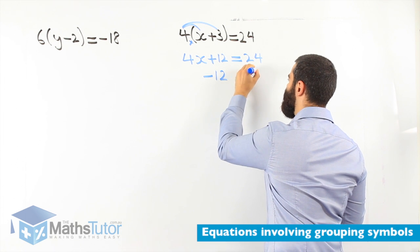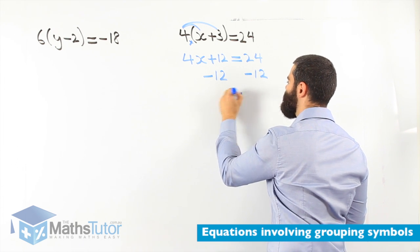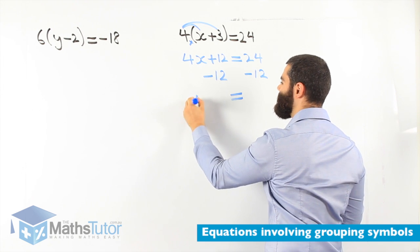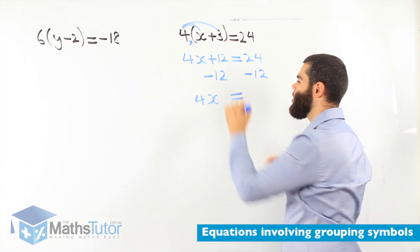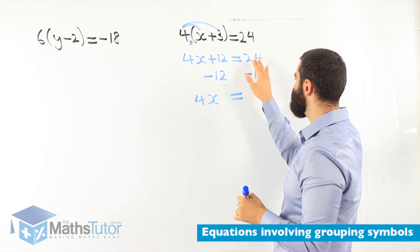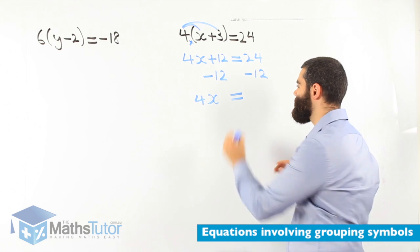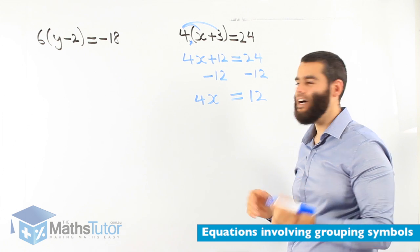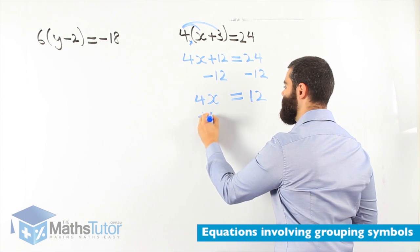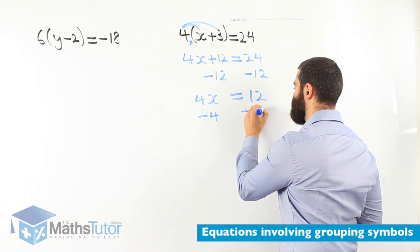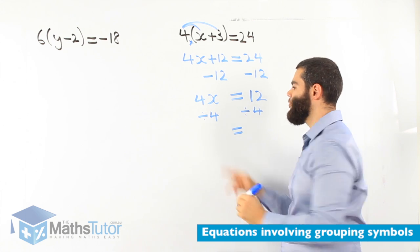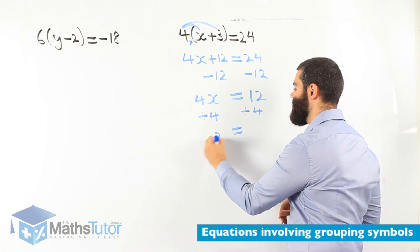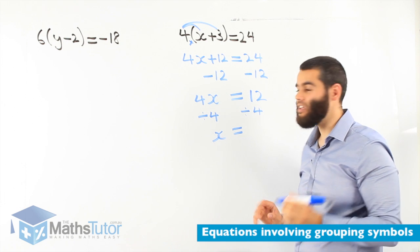Minus 12 on one side, minus 12 on the other side. 4x is left because 12 take away 12 is gone. 24 take away 12 is 12. 4x equals to 12. Now, we divide by 4 and we divide by 4. 4 divided by 4 is 1, so 1x. And 12 divided by 4 is 3.